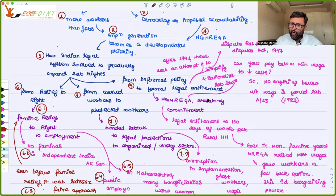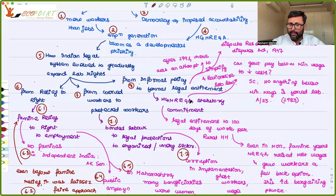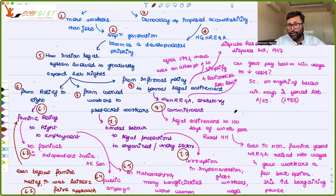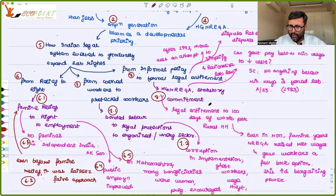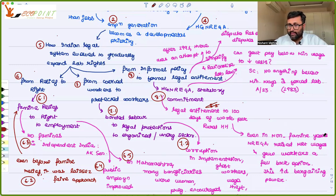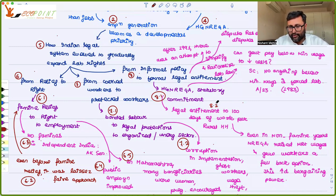We have moved from informal policy to formal legal entitlement. The best example is the Mahatma Gandhi National Rural Employment Guarantee Act — MGNREGA. It is a statutory commitment that the government is going to give 100 days of work per rural household; if not, you can go to the court of law. Even in non-famine years the government raised wages under MGNREGA, increasing workers' bargaining power. Workers can always tell prospective employers: we are getting this much in MGNREGA, so you have to pay more than that.